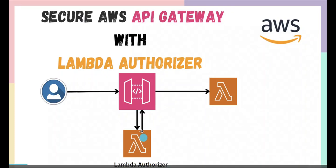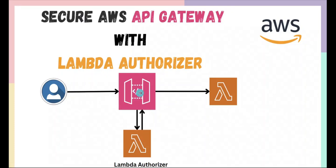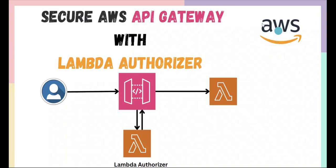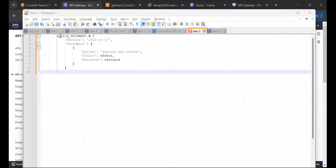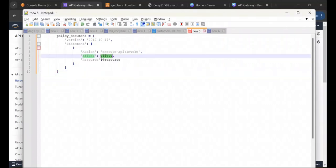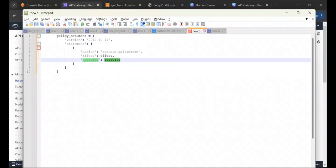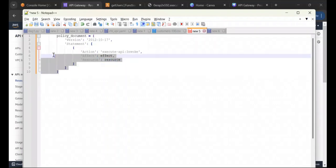In a nutshell, the Lambda Authorizer needs to check for an authorization token in the request. If the token matches the expected token, it needs to return an IAM policy saying this user has access to invoke this Lambda. Basically, this Lambda generates an IAM policy based on the authorization token it receives. The policy document specifies whether the effect is Allow or Deny, and the resource is the API Gateway method ARN.